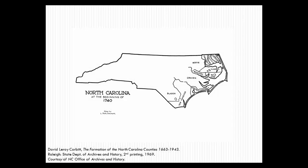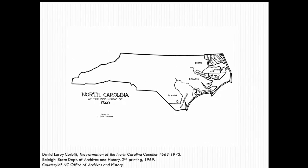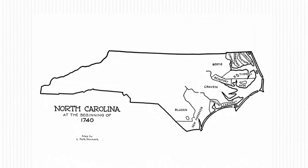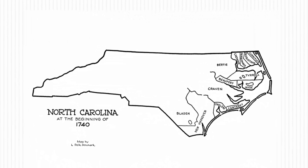In North Carolina, most of the legal transactions are recorded at the county level. Look at the dates of the ancestor you are researching, then look at the county in which the family lived. When was the county created? If you need records prior to the creation of that county, what is the parent county or counties, and when was the parent county formed? You may need to research records in multiple counties as you go back in time.